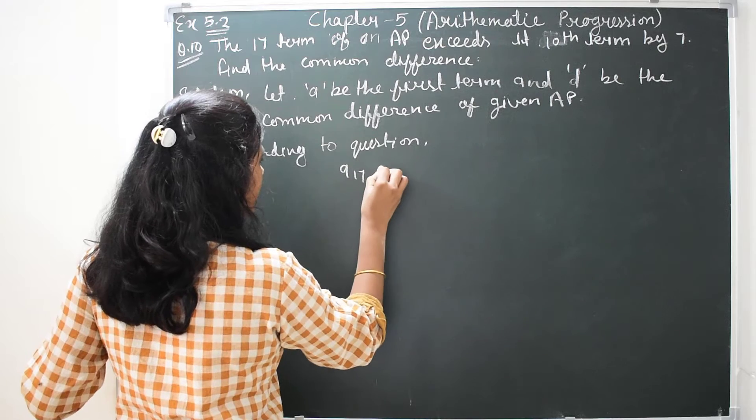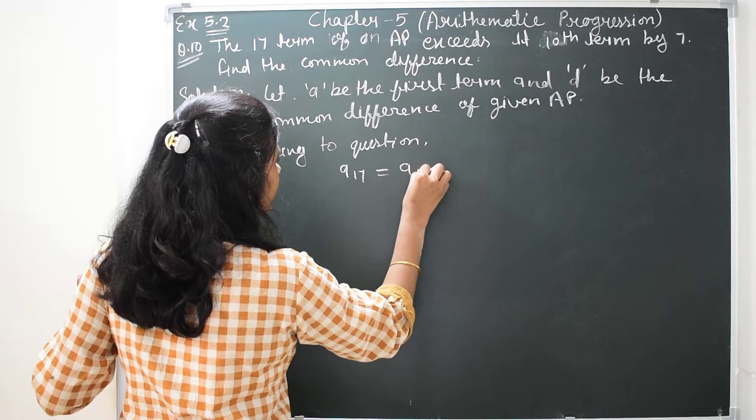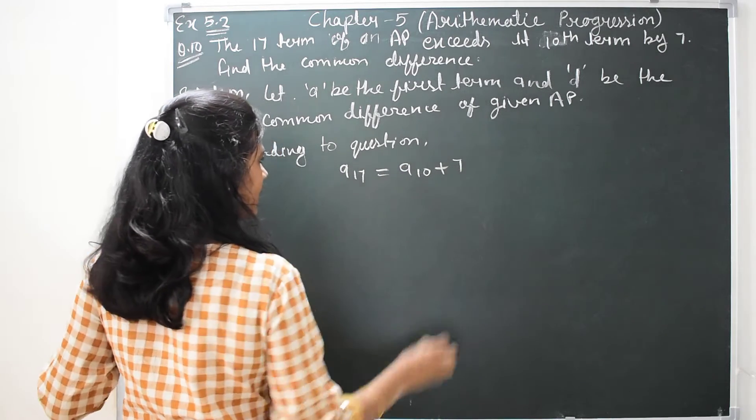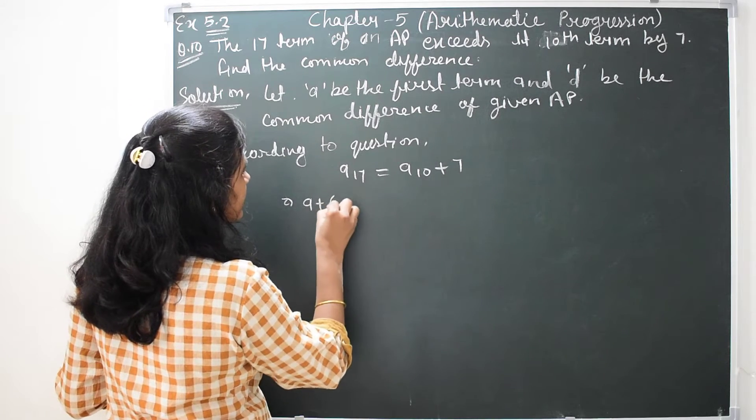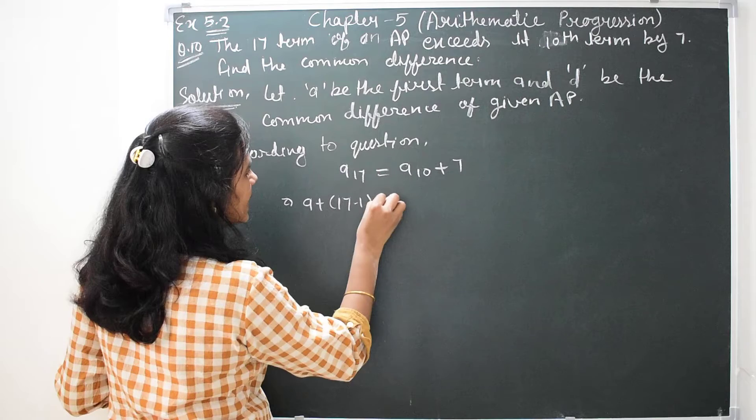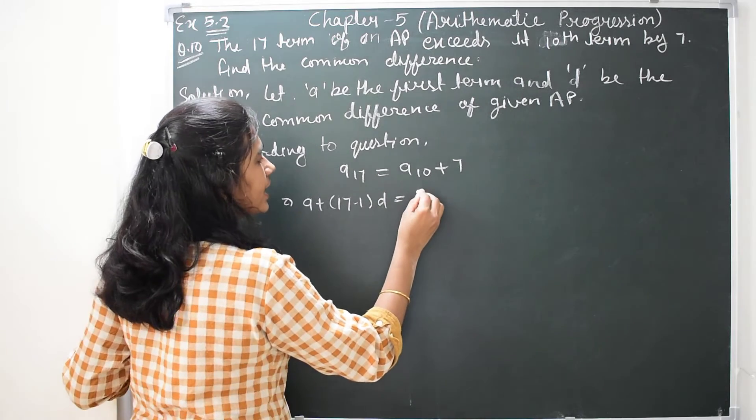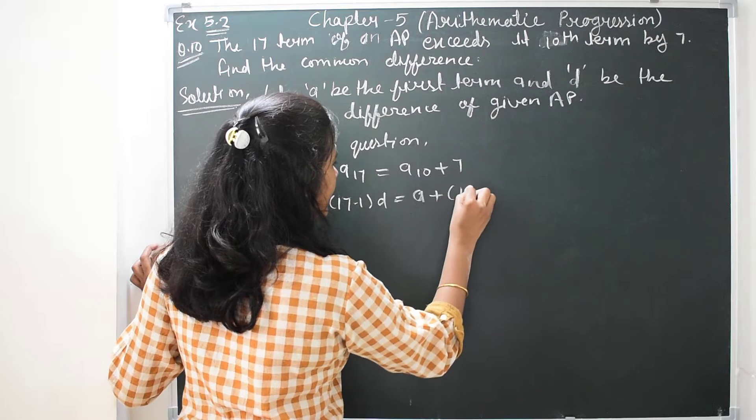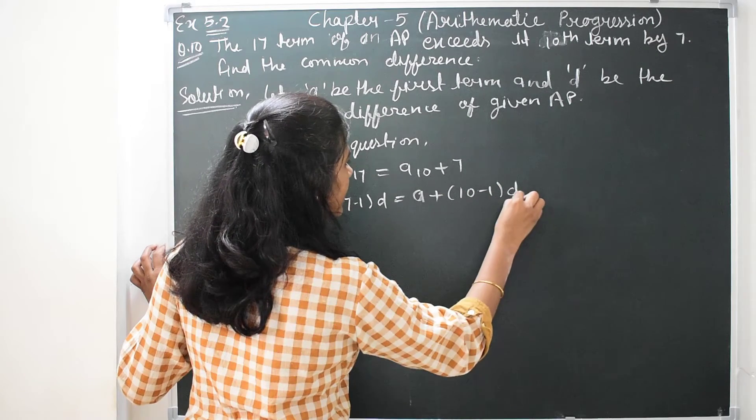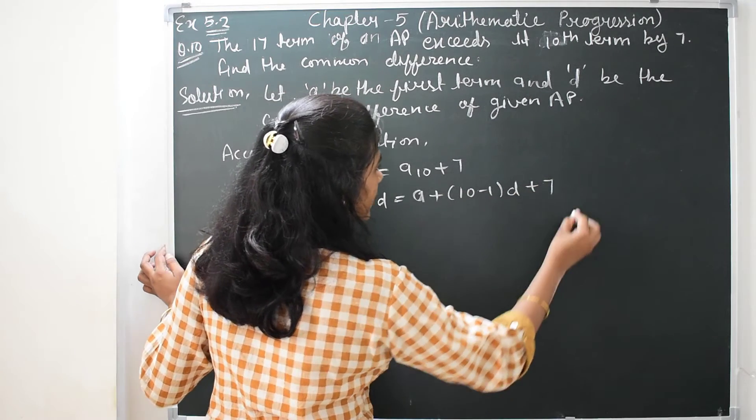The 17th term exceeds the 10th term by 7. So A plus 17 minus 1 times D is equal to A plus 10 minus 1 times D plus 7.